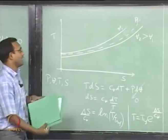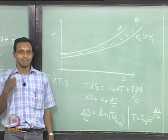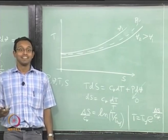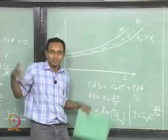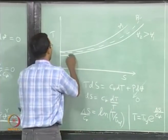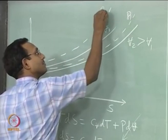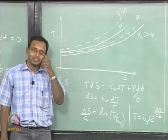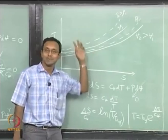For a higher pressure P2 > P1, entropy decreases because molecules are pressed together and have less space for disorder. So the constant-pressure curve shifts to the left for higher pressure. These curves are useful when thinking about what process a gas fluid element is going through.